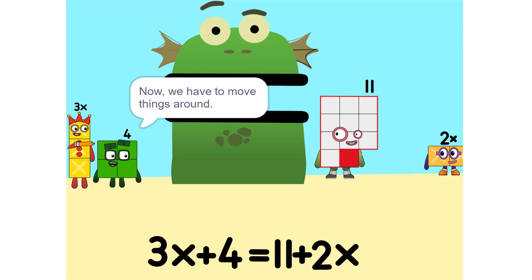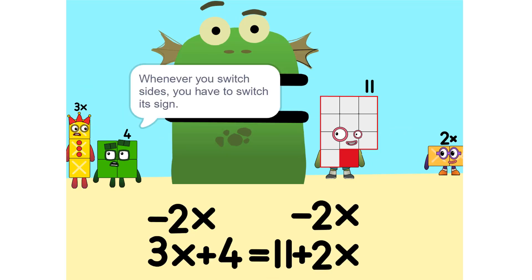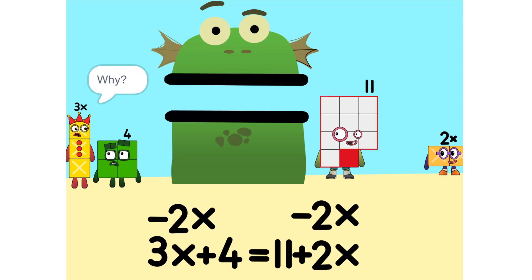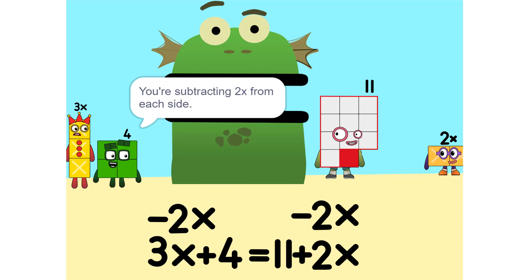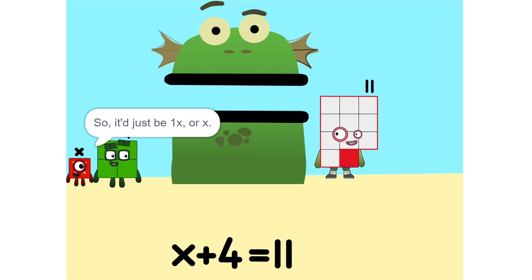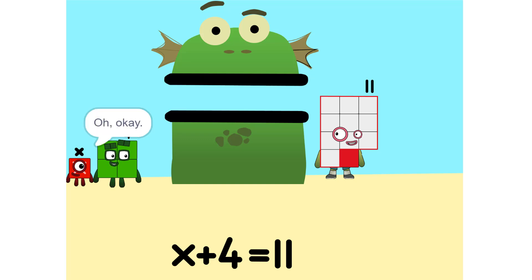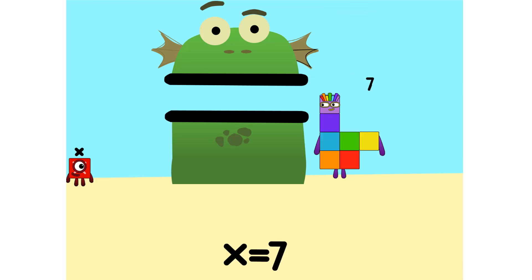Now we have to move things around. We have to move this 2x to this side. So, 5x. 11 minus 3 is... so, 5x equals 7.